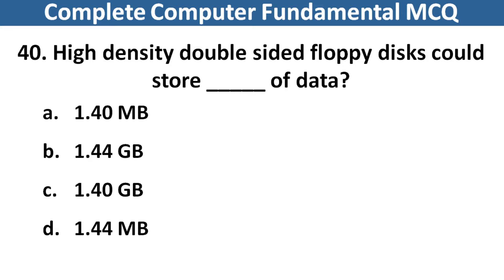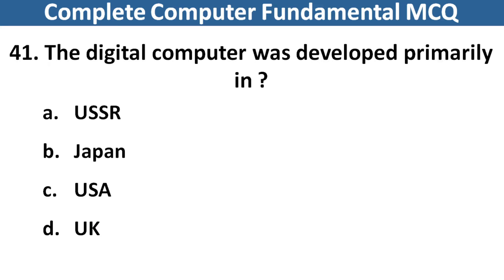High density double side floppy disk could store dash dash of data. Right answer is option D, 1.44 MB.